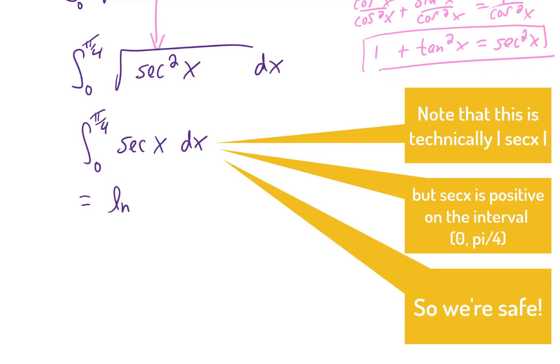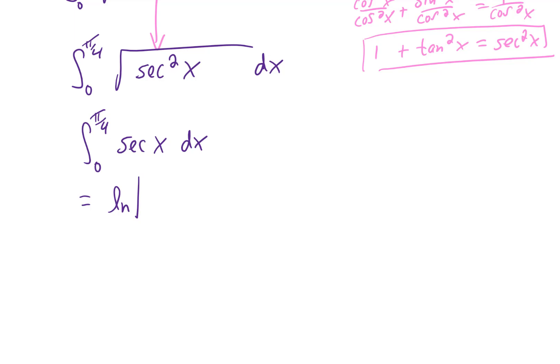You can look it up in a table. And there are longer ways to derive this. But long story short, the integral of secant x is the natural log of secant x plus tangent x. And we're going to evaluate that from zero to pi over four.